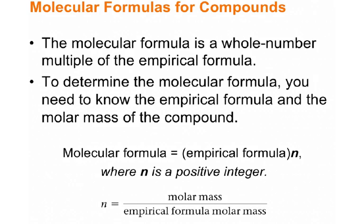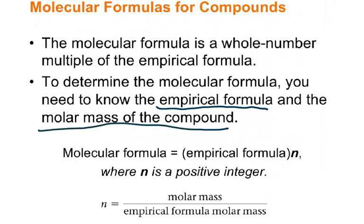Before, you had learned that the empirical formula was the simplest whole number ratio, or the reduced form of the molecular formula. Now, in order for us to obtain a molecular formula, we are going to need two pieces of information: one, the empirical formula, and two, the actual molar mass of the compound.